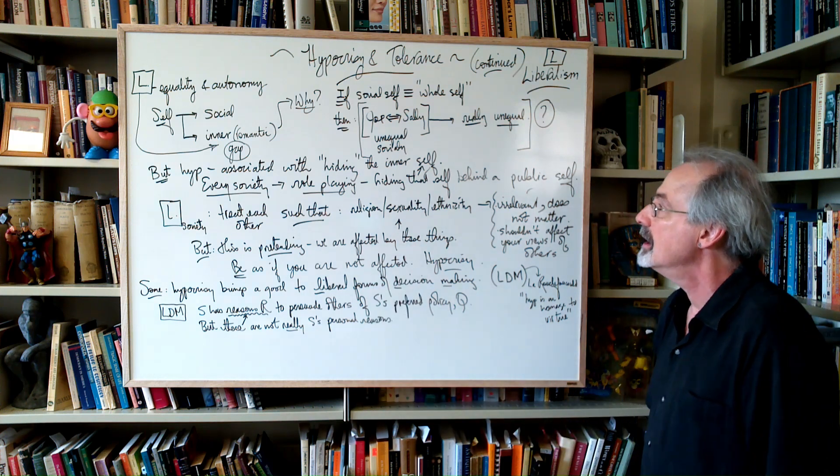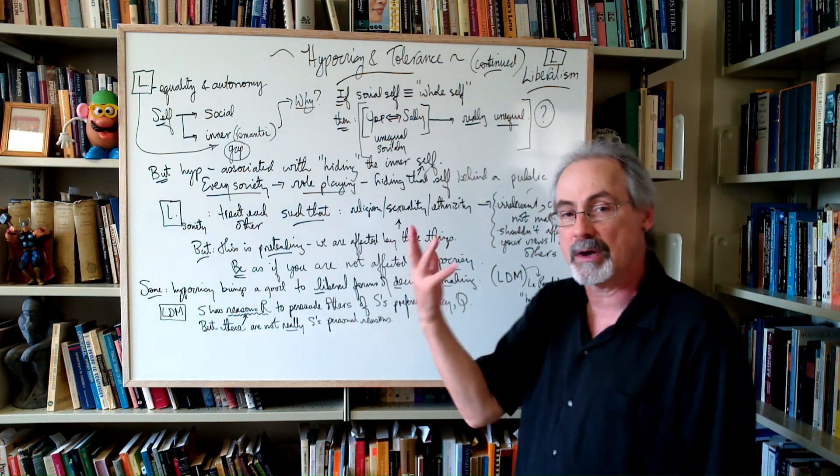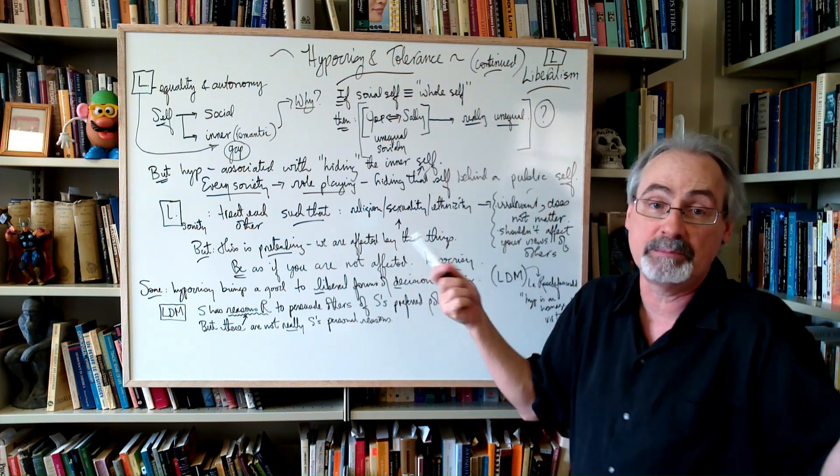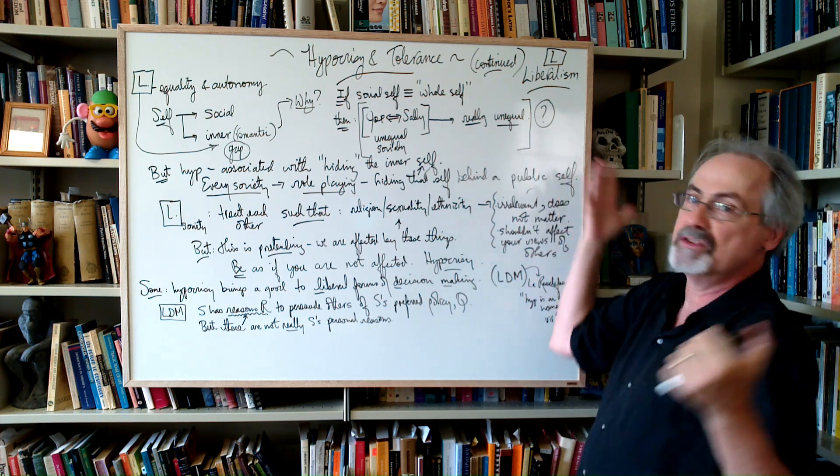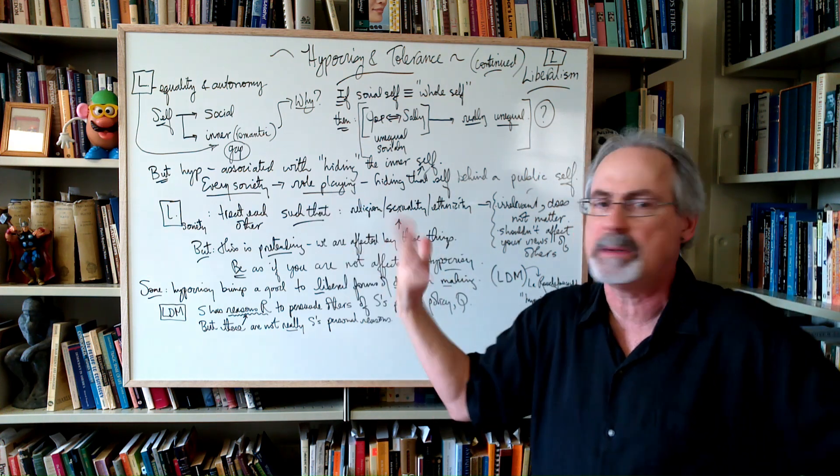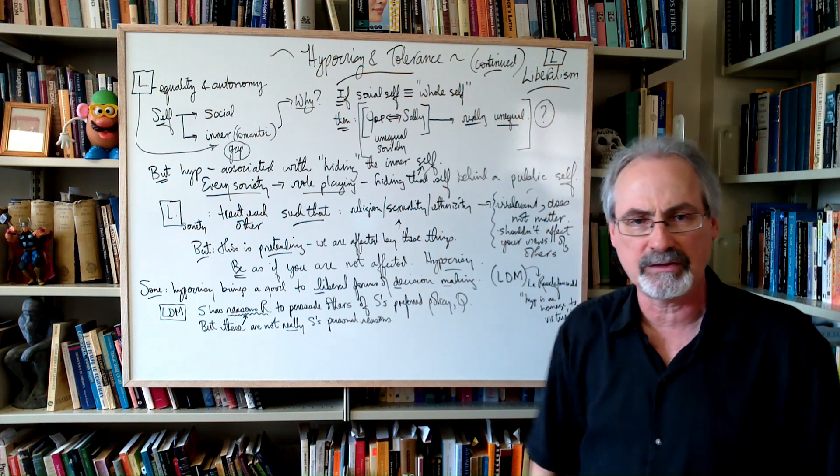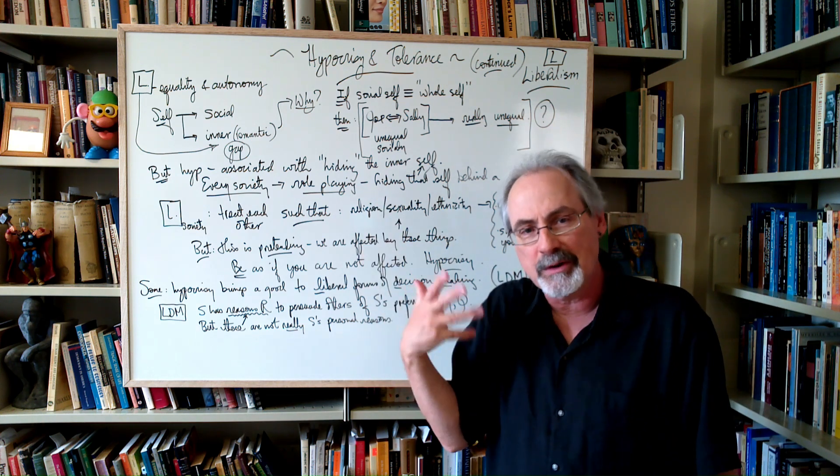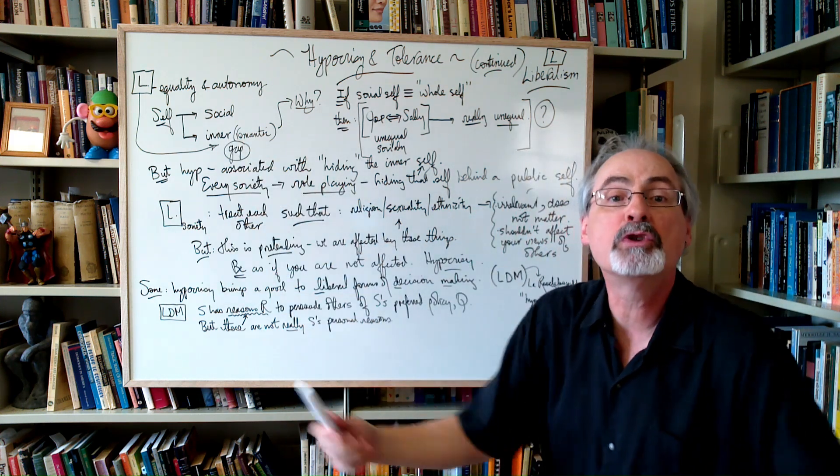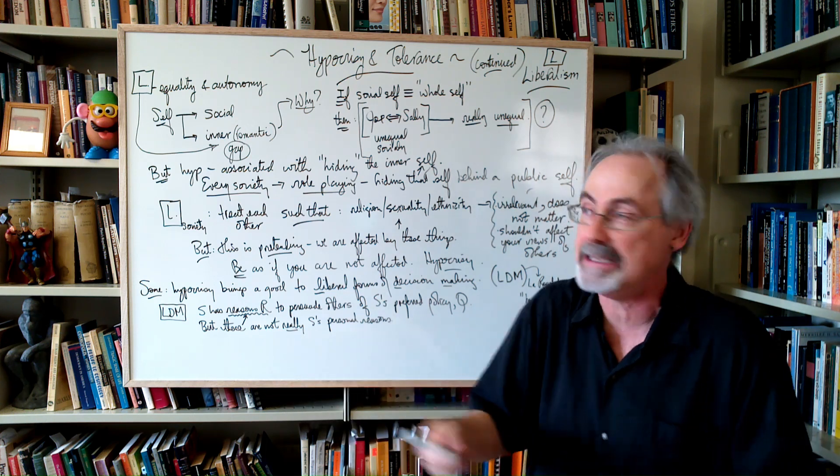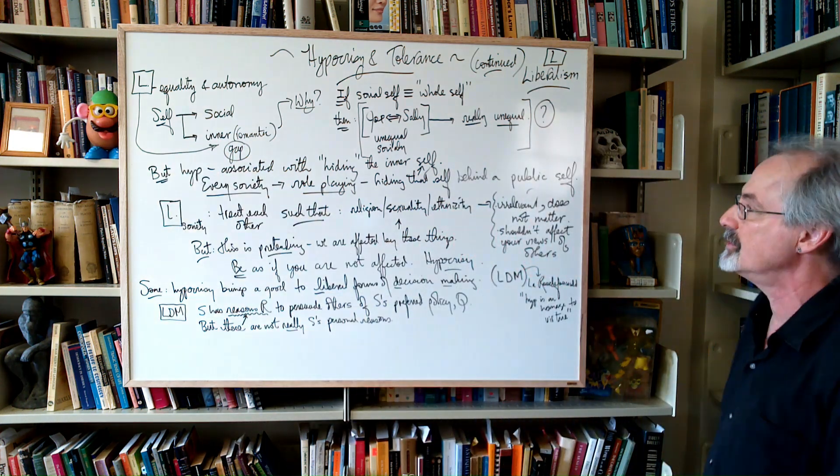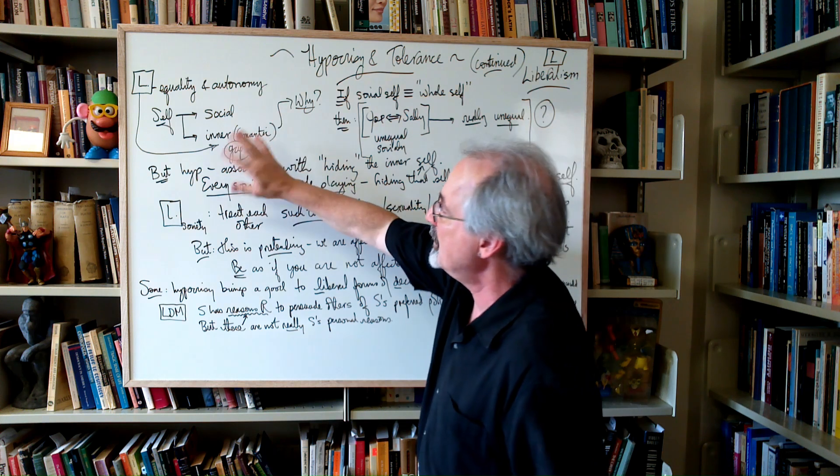And in just simple logic, you have a modus tollens. You're denying the consequence. This is the consequence. And you're denying that. Well, then there has to be a problem with the antecedent, which is your presupposition that the social self is the whole self. So if we do have that, if we have this notion of the inner self, we are in a system that lays the grounds for hypocrisy, because there is a contrast between the public and the private self.